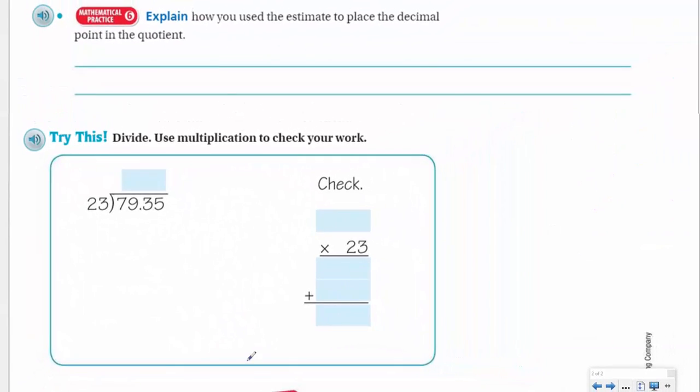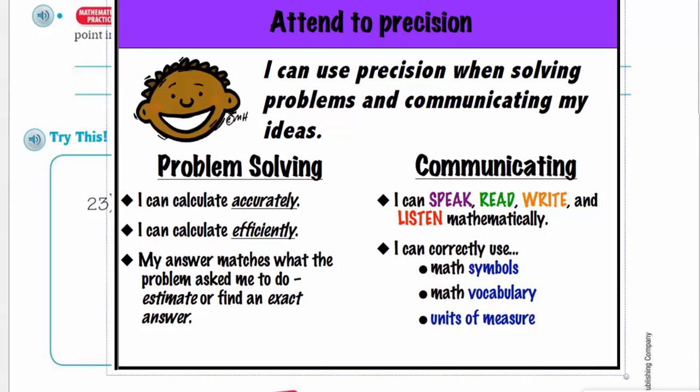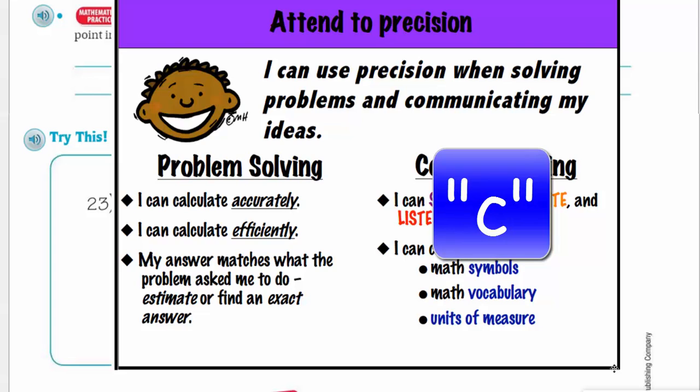OK. Now let's look at mathematical practice six. These mathematical practices are important because they help us with the steps involved in the process with acquiring that deeper level math. Here it's about attend to precision. It says I can use precision when solving problems and communicating my ideas. And you can see that I can do it accurately, efficiently, you know, and I can be exact whether it's asking me to estimate or find an exact answer, which is what we just did in this particular problem. OK. Communicating that you can speak, read, write, and listen mathematically. And of course, you know, using the correct math symbols, vocabulary, that kind of thing. OK. Thank you, mathematical practice six.